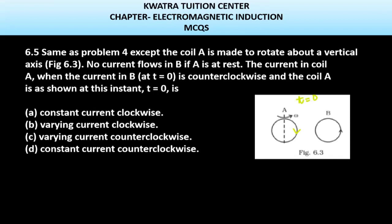It must be constant. Why? Because no current flows in B if A is at rest. That means if B has a current in B, then it will be equal to A.